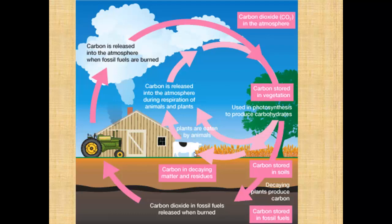Now this is an overall summary of the whole process — shamelessly stolen from the internet. Do have a look at all these processes. Carbon is stored in vegetation, which counts as a reservoir of carbon. As plants die they add to the reservoir of carbon in the soil. Fossilization may produce fossil fuels, which are a reservoir of carbon atoms held underground. As they are burnt, that puts carbon dioxide into the atmosphere, which is a reservoir of CO2 in the atmosphere. Things are cycled around — do have a look at that in a bit more detail. You can pause the video at this point and have a look.